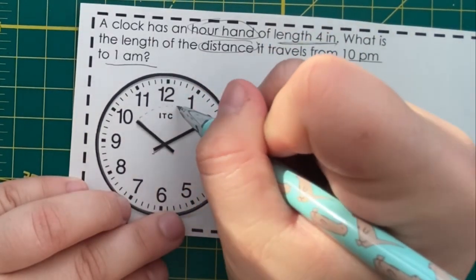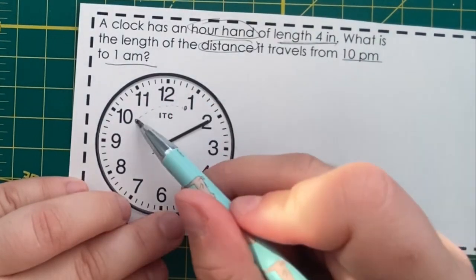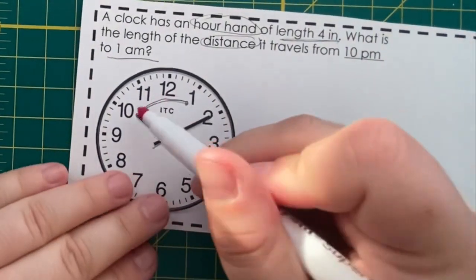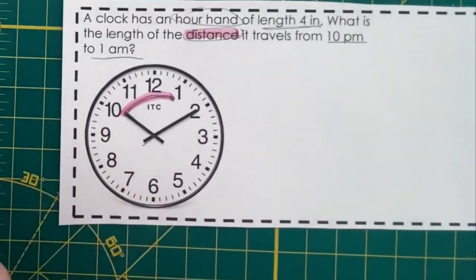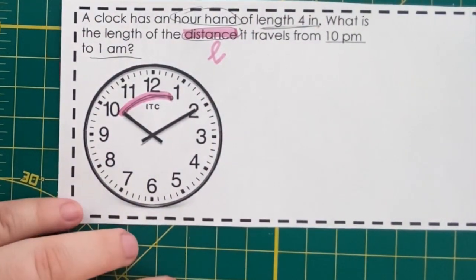we're talking about the arc that we're creating from 10 p.m. over here to 1 a.m., highlighted in black. That's the distance, or L, if we want to use the variable we used on our last notes.